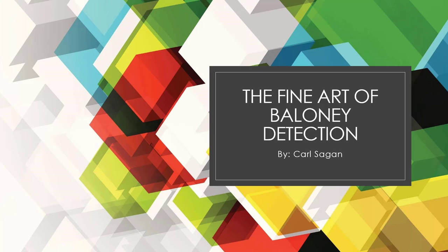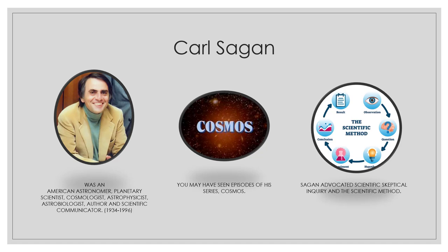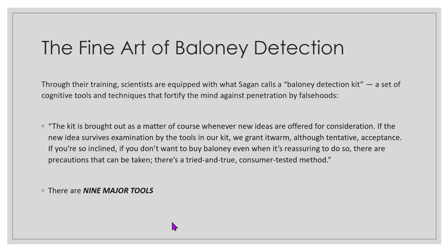I'd like to introduce you to Carl Sagan's baloney detection kit and the things that you can look for when you're looking at marketing schemes about different products. Carl Sagan was an American astronomer, and you may have seen some of his episodes called The Cosmos. He really advocated for scientific skeptical inquiry and the scientific method in everyday life. He built what he called the fine art of baloney detection. Through their training, scientists are equipped with what Carl Sagan calls the baloney detection kit — a set of cognitive tools and techniques that help fortify your mind against penetration by falsehoods.